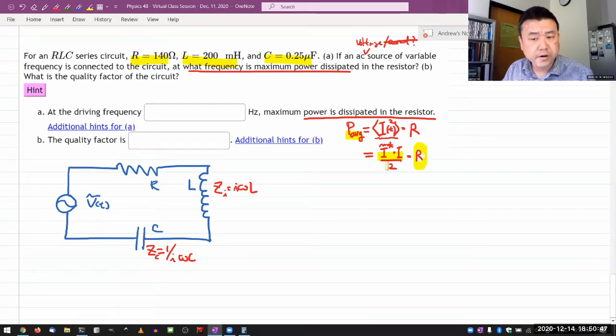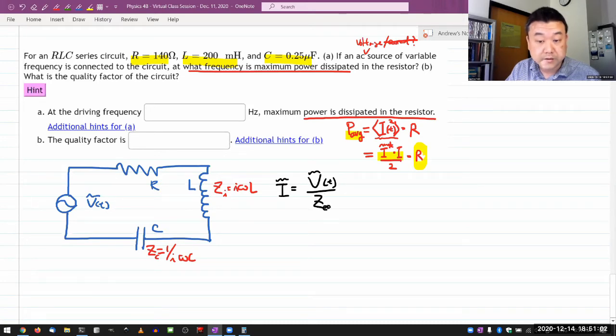So really what maximizing the average power comes down to is really maximizing the I squared quantity because the resistance will be constant. So once you have maximized the current, then you have maximized the power dissipated in the resistor.